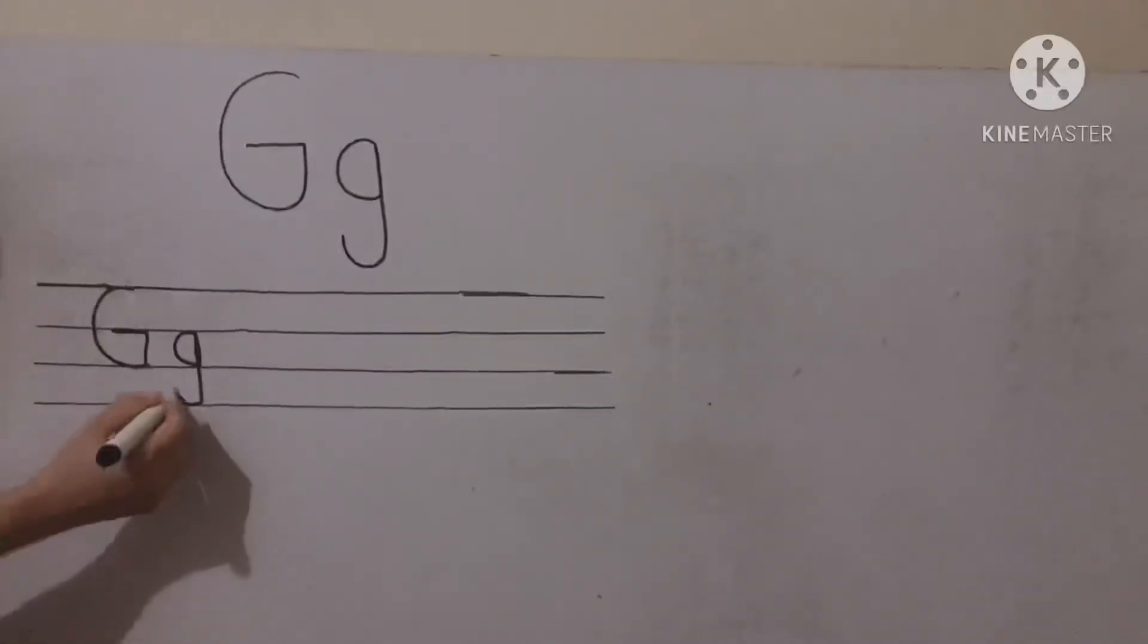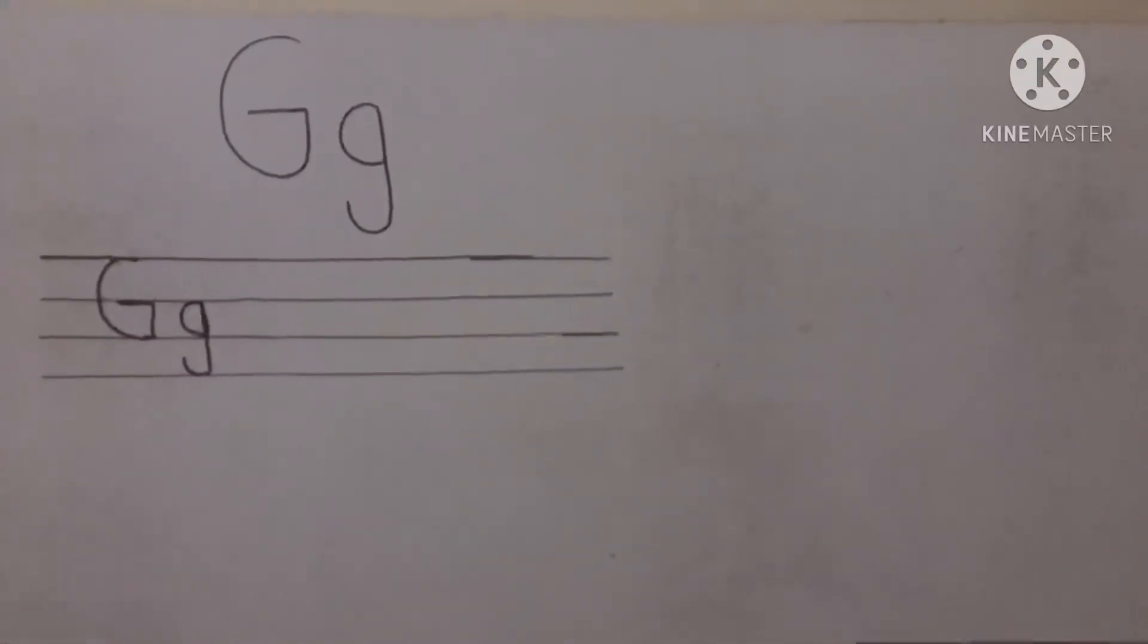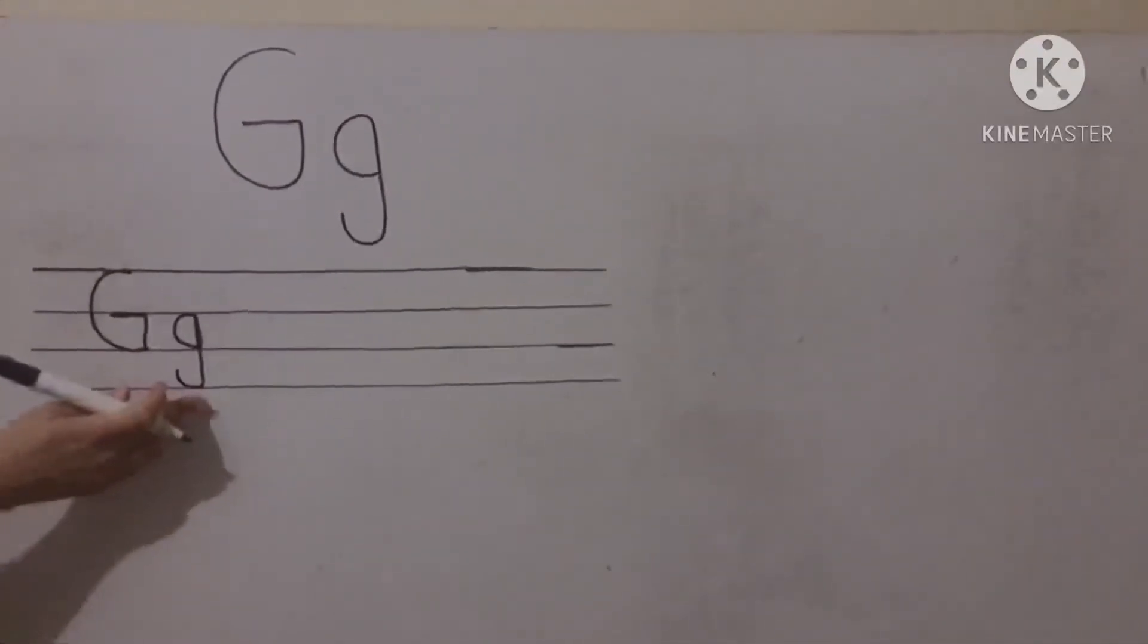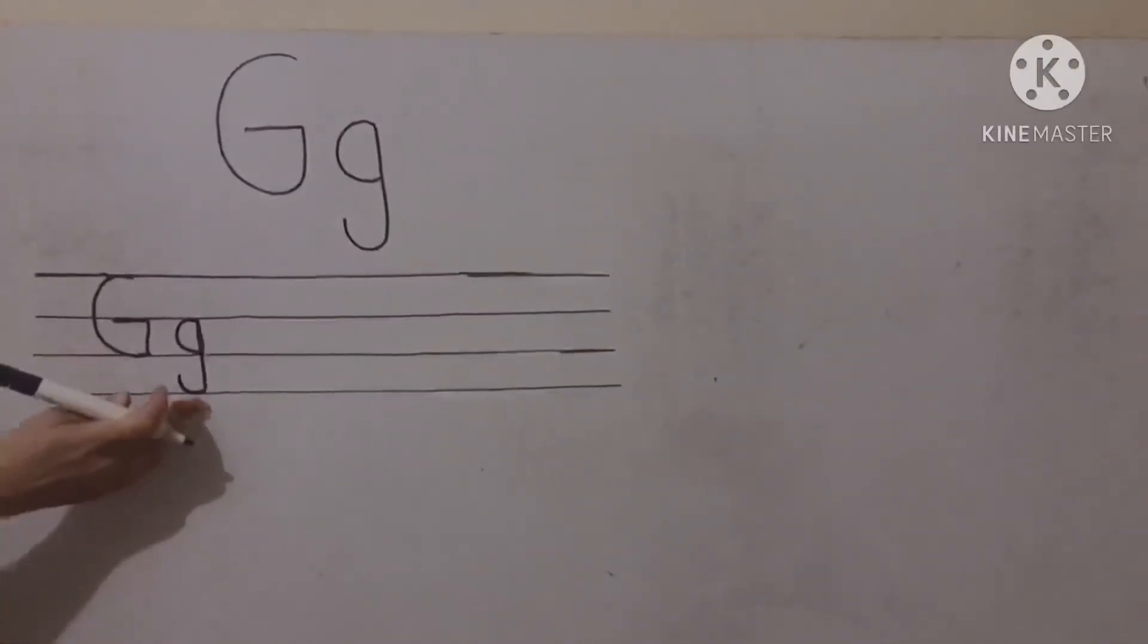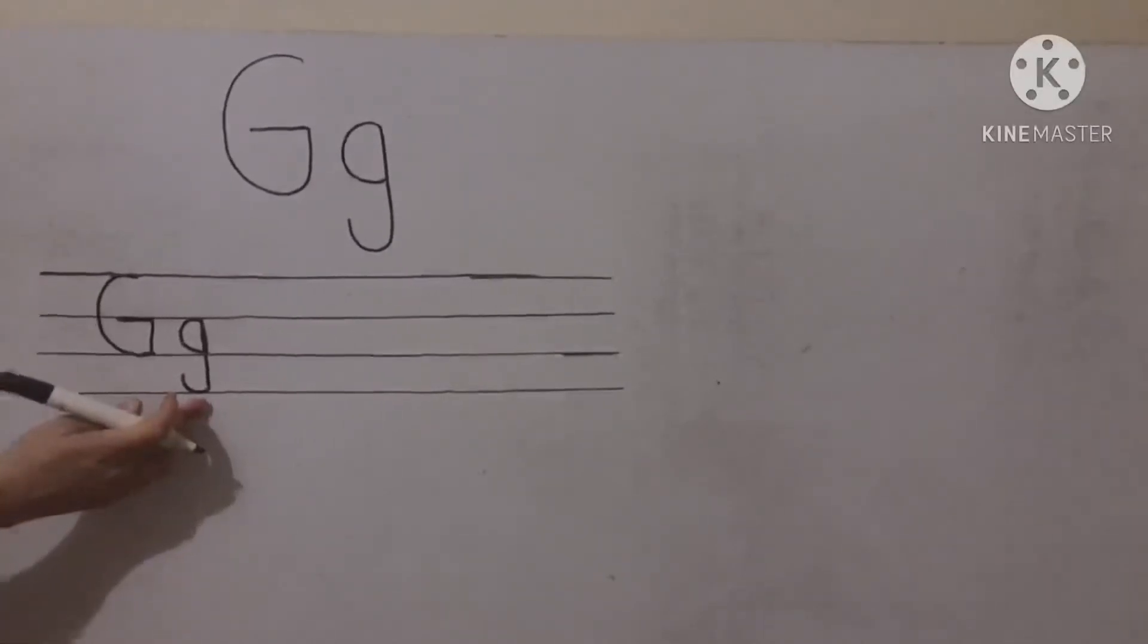So what we have to do, make a semicircle again, and then up, and then down, touch the bottom line, and then around. Okay. So this is your small letter and it says g. Right.